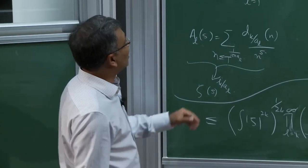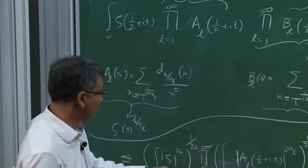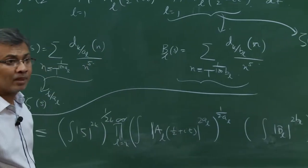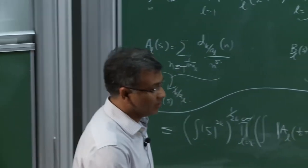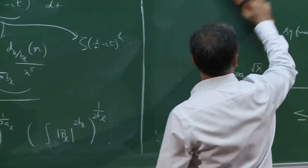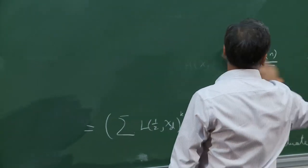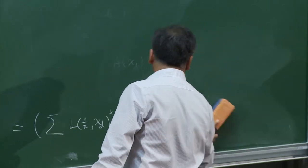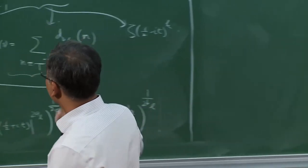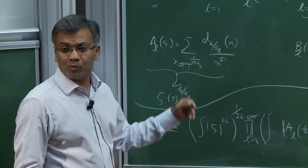Everything can be evaluated since this is a zeta function multiplied by two short Dirichlet polynomials, and each of those is a short Dirichlet polynomial. This gives you a lower bound for the 2k-th moment of zeta, which I claim only depends on the parameter k and doesn't depend upon any rational approximations to k.